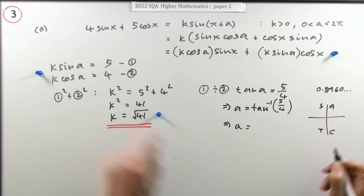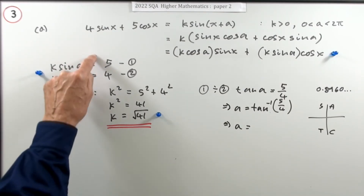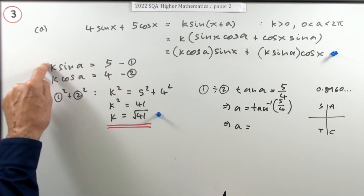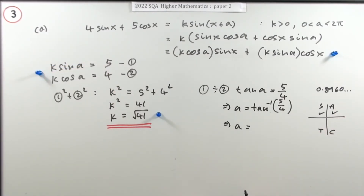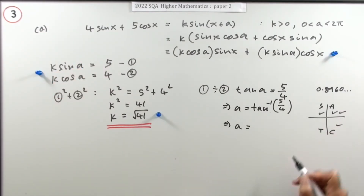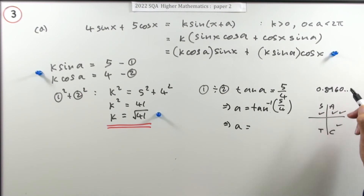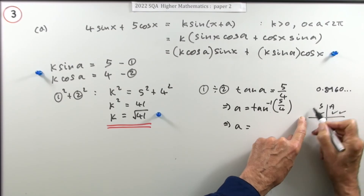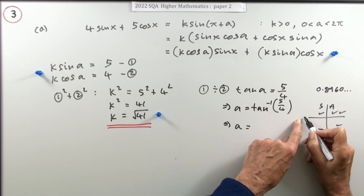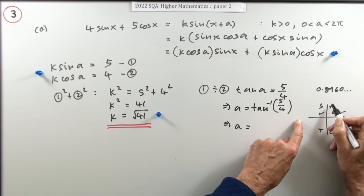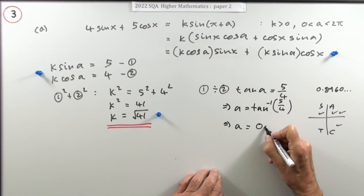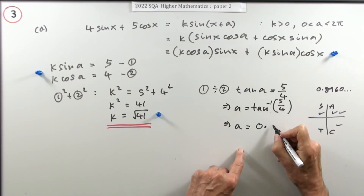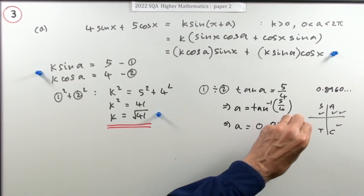Now check which quadrant using the CAST diagram. Since k is positive, both sin a and cos a must be positive, so a must be in the first quadrant — and 0.896 is indeed an acute angle in radians, since 90° corresponds to π/2 ≈ 1.57. So a = 0.896 to three decimal places. That gets the mark for part A.